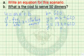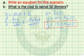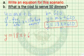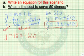Let us continue to decide what is the cost to serve 50 dinners. Now since we have our equation, all we have to do is interpret where we replace 50. In this case, x is going to stand for the number of dinners, and y is going to represent the cost to the restaurant. So since we're interested in serving 50 dinners, we replace x with 50.